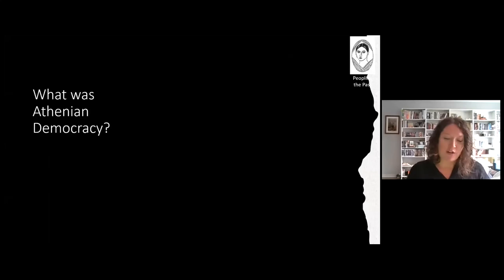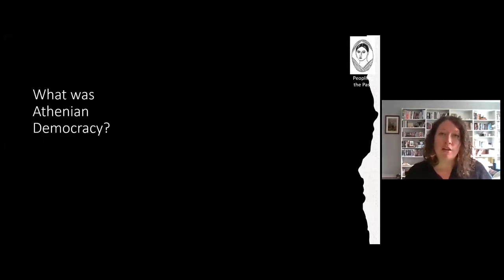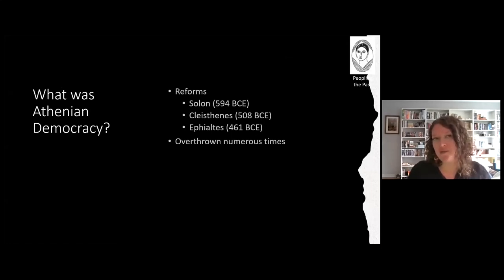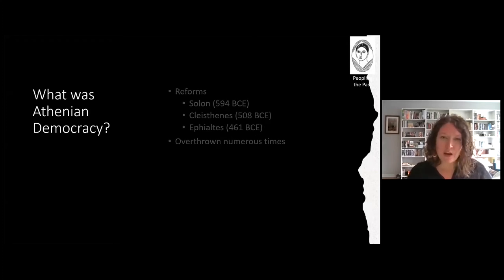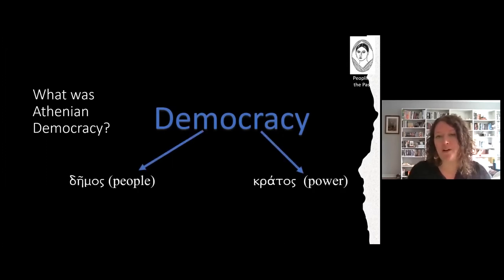What was Athenian democracy? It's important to note that Athens was not the only Greek city that had democracy, but it's definitely the most famous because we know so much about it. The road to democracy in Athens was not a smooth one — there were many reforms, and it was actually overthrown numerous times. But the Athenians always seemed to revert back to some kind of democracy, or at least parts of its system, even under Roman rule. The word democracy is a combination of two Greek words: demos, the people, and kratos, power — so simply put, people power.